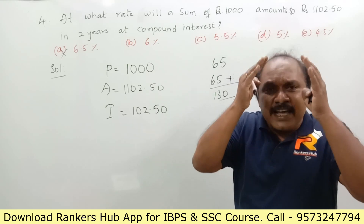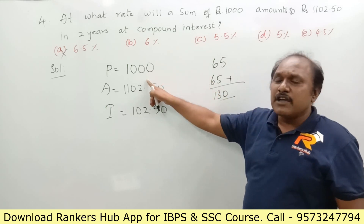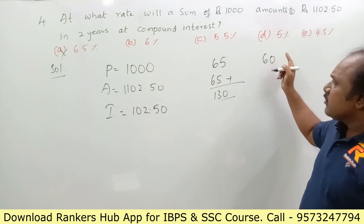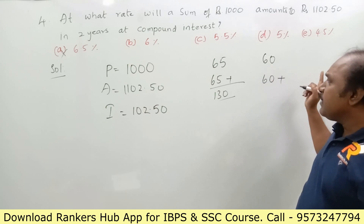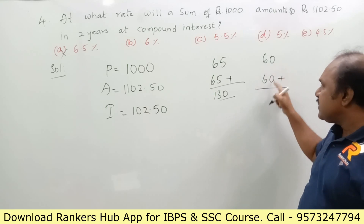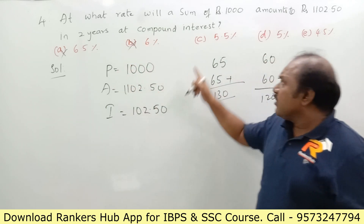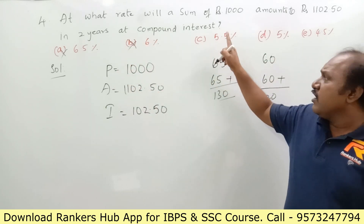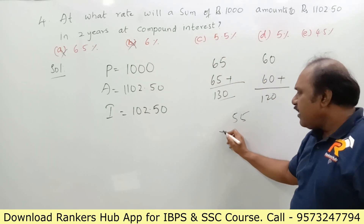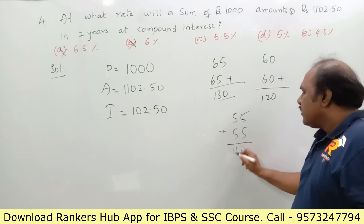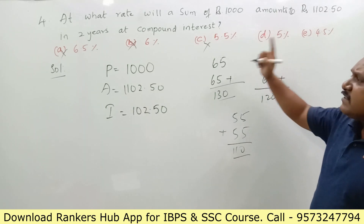The second option is 6 percent. Six percent of 1000 is 60. First year: 60; second year: 60 plus 6 percent of 60, so 60 plus 60 is already 120 — more than 102.5, so this is also wrong. The third option is 5.5 percent. 5.5 percent of 1000 is 55. 55 plus 55 is 110 — still more than 102.5, so 5.5 percent is also wrong.